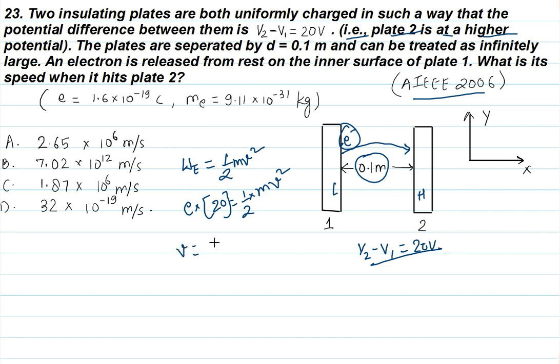You will write the velocity value as the square root of twice e.